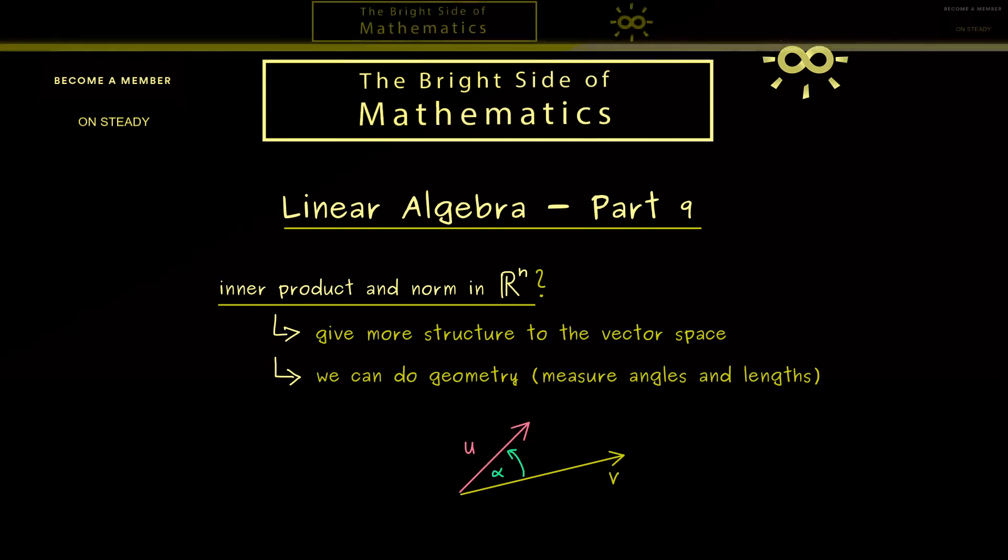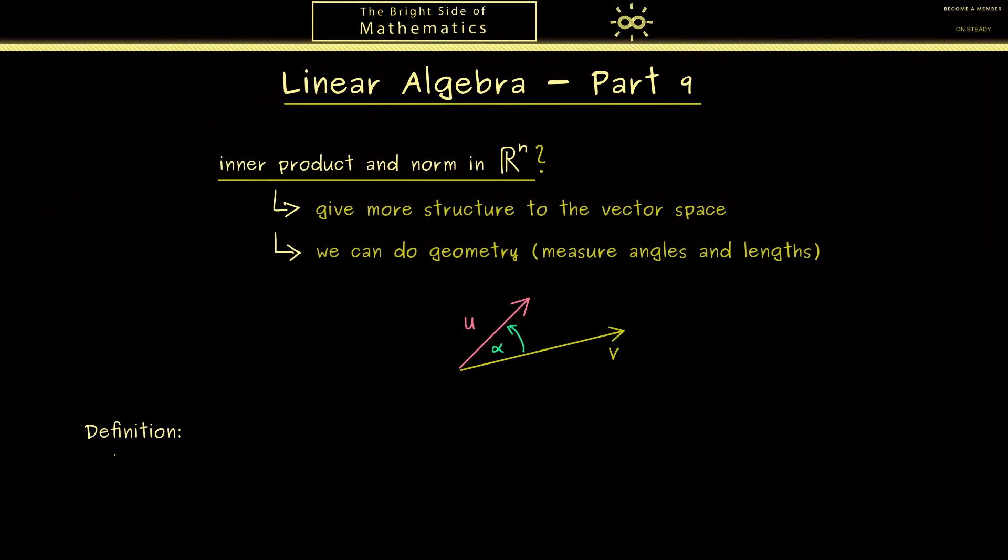And this leads us to the first definition of today. This will be the standard inner product in R^n. The motivation for it we have already seen in part 3 in the plane in the vector space R^2. And now it's no problem at all to generalize this to the vector space R^n.